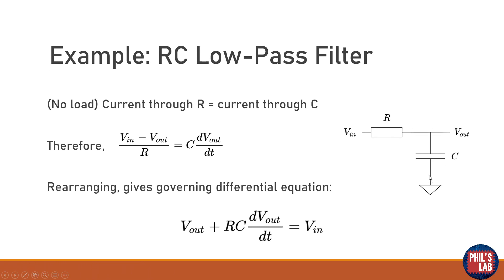Now remembering the current relationships before we can write up an equation here. So the input minus the output voltage divided by the resistance is the current through the resistor and the capacitance times the rate of change of the voltage across it is also the current. And these two are equal. Now we can rearrange that and put V_out on one side and V_in on the other side and this gives us a governing differential equation for the system which relates the output to the input.